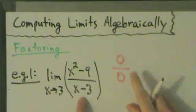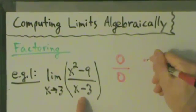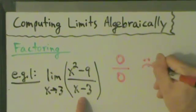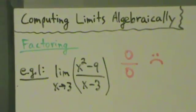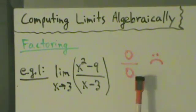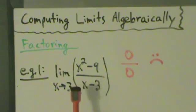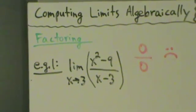You can never divide by 0 no matter what's on the top, even if it's also 0. So this makes us sad for now, but let's try something else. Because we have 0 over 0, that usually indicates that there's something that could be factored or canceled here. So let's see if factoring works.